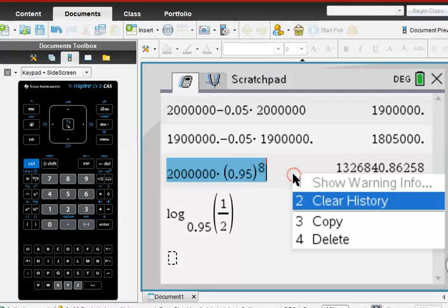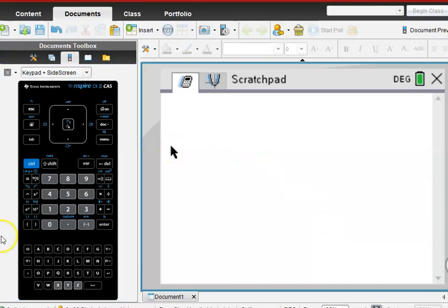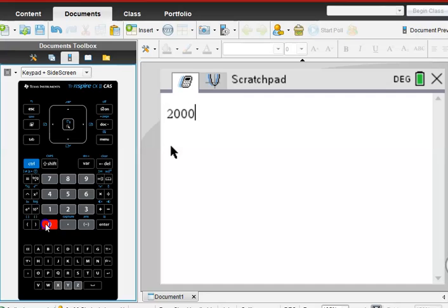So I'm just going to clear this from my last problem and show you. 2,000, and in parentheses, then you do 1 plus 0.04 divided by 4 outside the parentheses, and then raise that to the power.